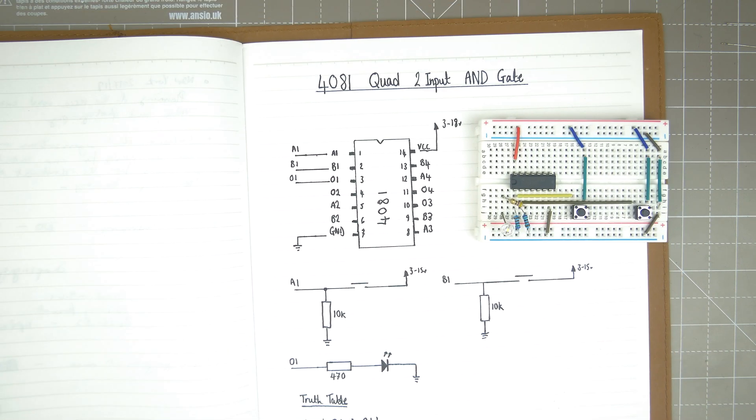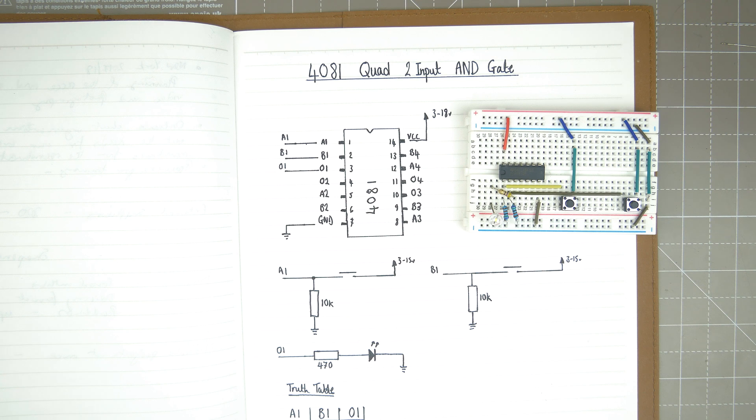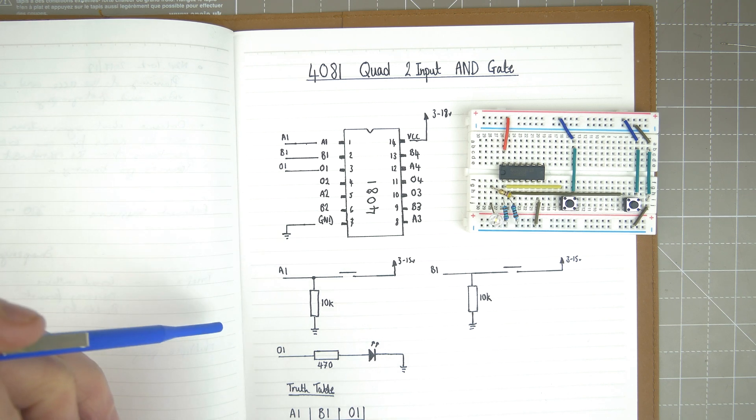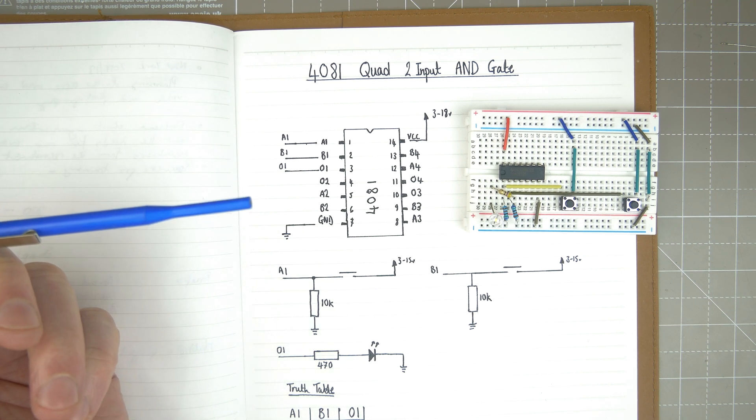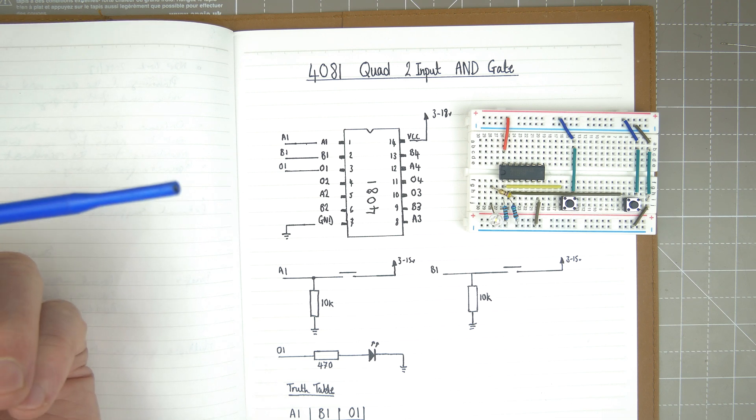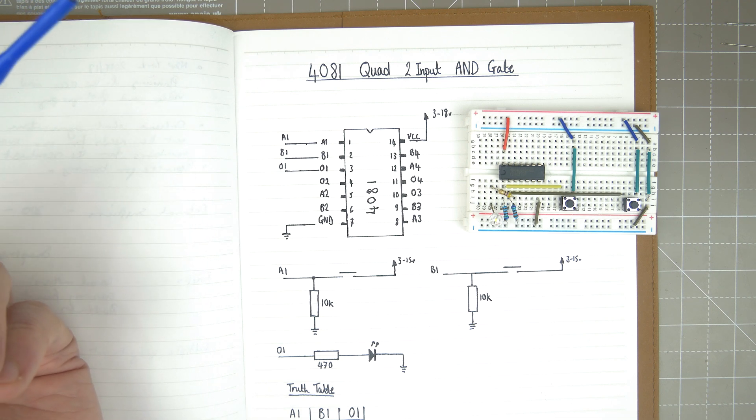So what would you use this for? Well, it gives you four of these little switches, but you could use it for a safety device. It could be that you need two contacts to be connected when you close the lid to, let's say, a laser cutter.